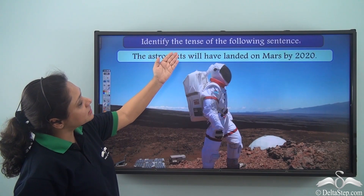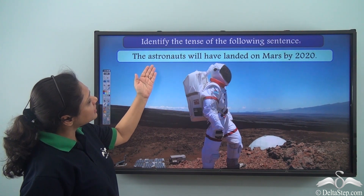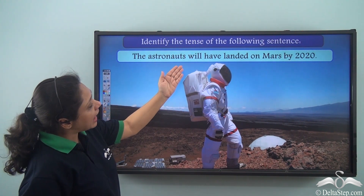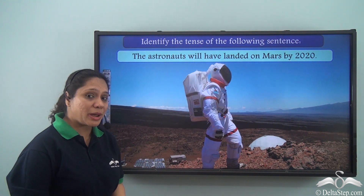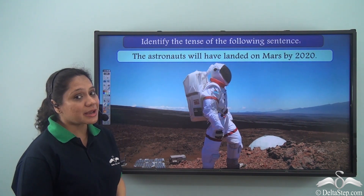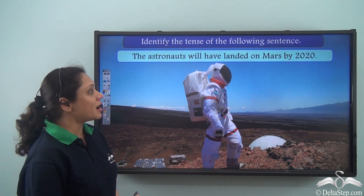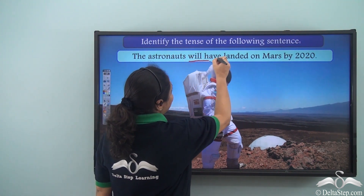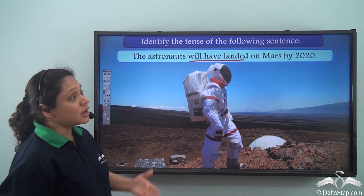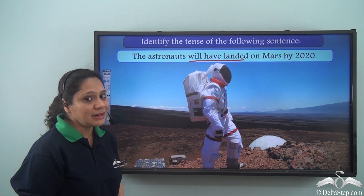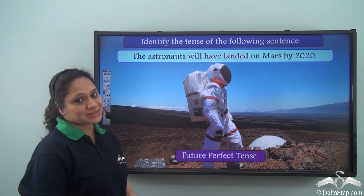Identify the tense of the following sentence: The astronauts will have landed on Mars by 2020. It is talking about the future, and the verb here is will have landed. This sentence is in the future perfect tense.